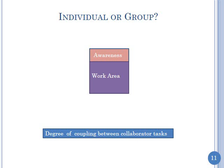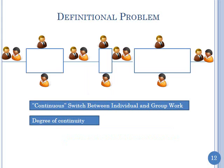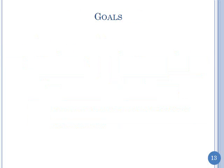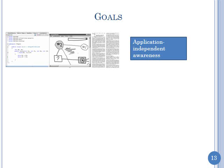Another definition problem has to do with what 'continuous' means. If I do individual work for one day, then group work for two days, then individual work for one day — as opposed to switching every minute or every second — we have very different degrees of continuity. So we have to worry about the granularity of switching as well.